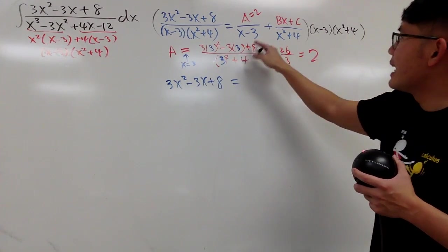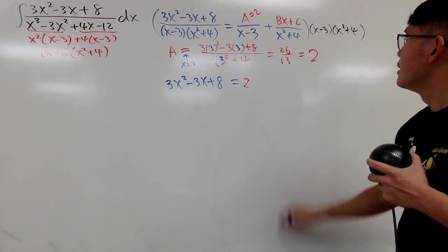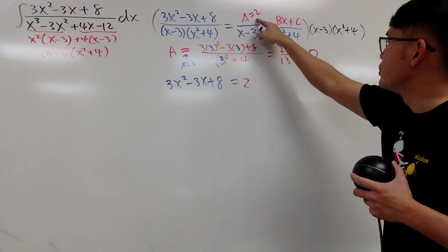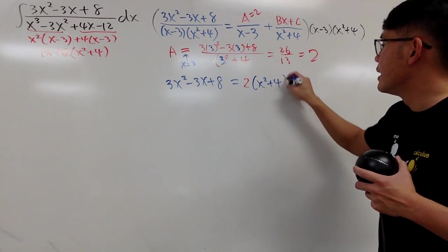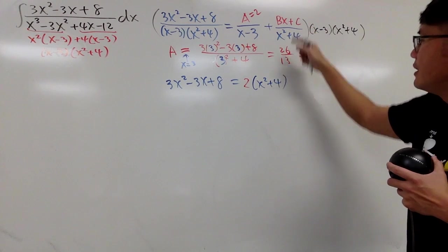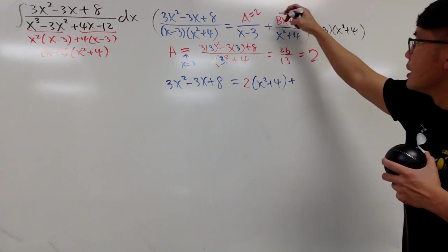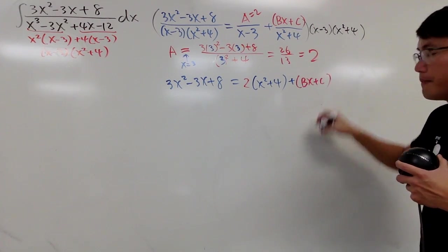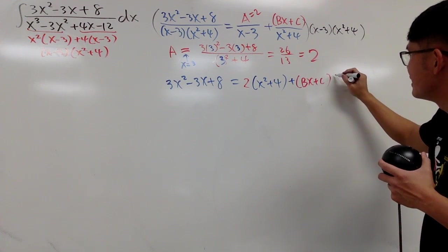And, you do this times that, don't forget, a is 2 already, so you have 2. This times that, the x minus 3 cancel each other out, so you have just 2 times this, which is not that bad at all. And then, this times that, of course this and that cancel, you have this right here, which you don't know at the moment. I'll just write down, bx plus c in parentheses right here, and you have to multiply by x minus 3.